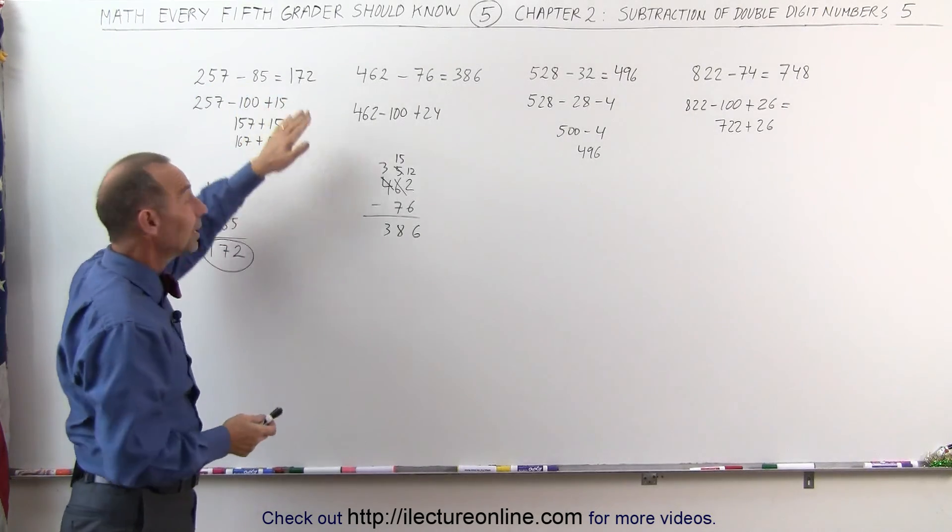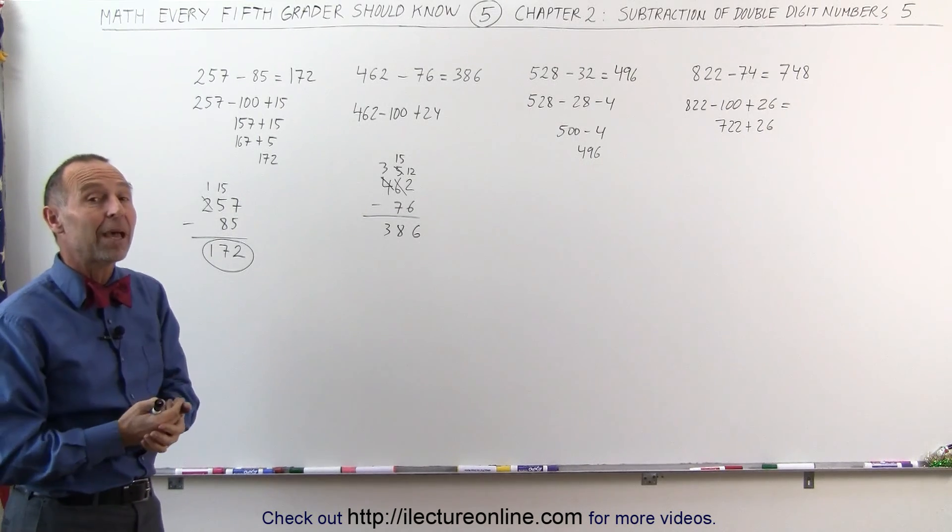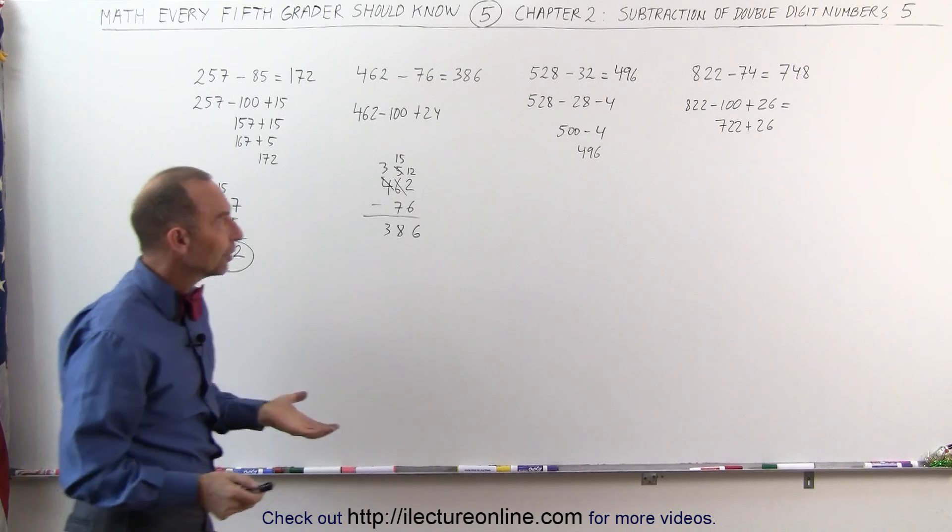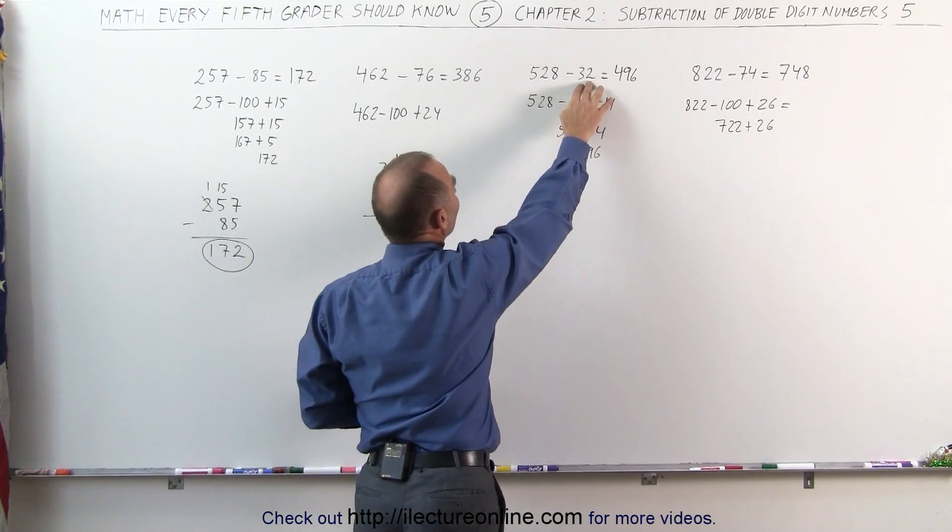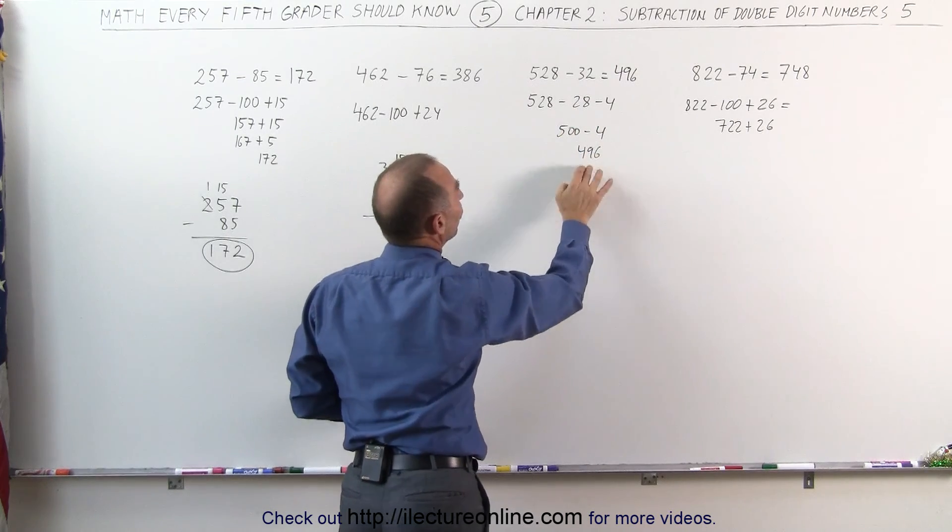But if you can learn how to do it like this quickly in your head, it will make it that much more powerful in handling all kinds of mathematics and later on handling all kinds of sciences. If you can come up with these kind of techniques and these clever techniques. 32 is the same as 28 and 4. So subtract 28 first. Then subtract 4.